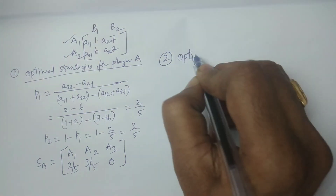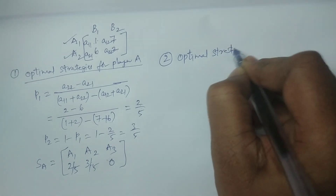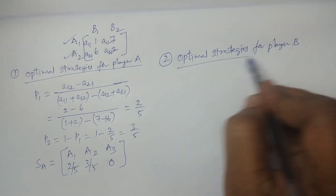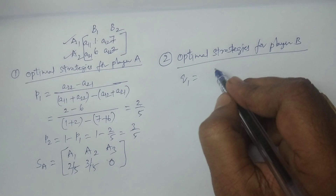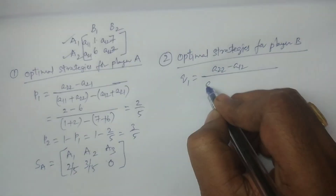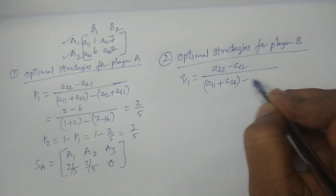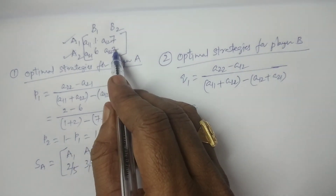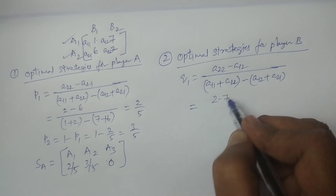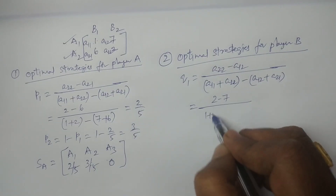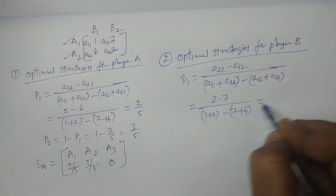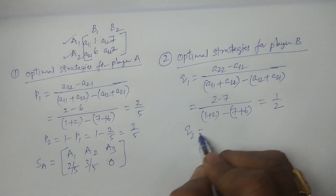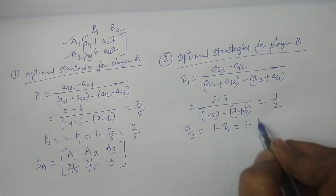Now calculate the optimal strategies for player B. The formula for Q1 is: (A22 minus A12) divided by (A11 plus A22 minus of A12 plus A21). That is (2 minus 7) divided by (1 plus 2 minus of 7 plus 6), which is minus 5 divided by minus 10, giving 1 by 2. Therefore Q2 equals 1 minus Q1 = 1 minus 1 by 2 = 1 by 2.